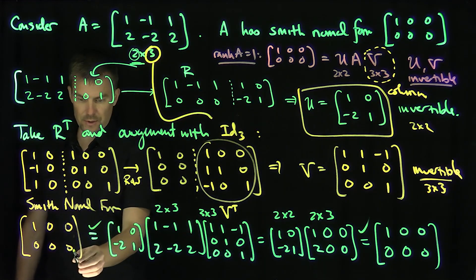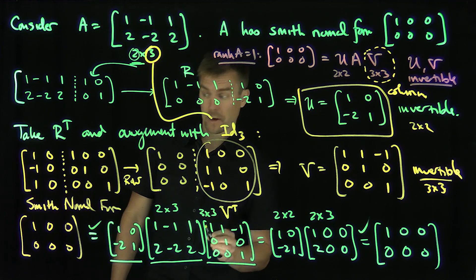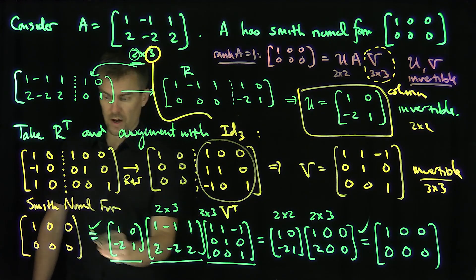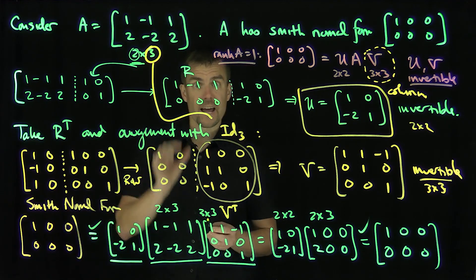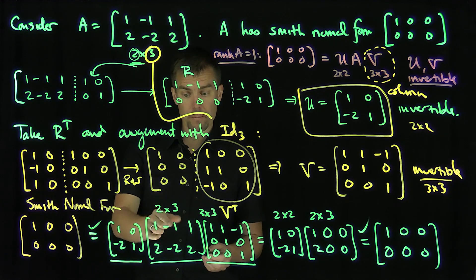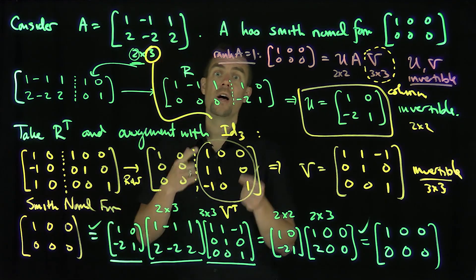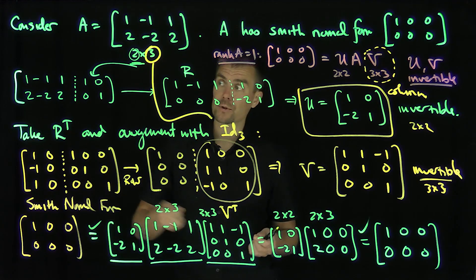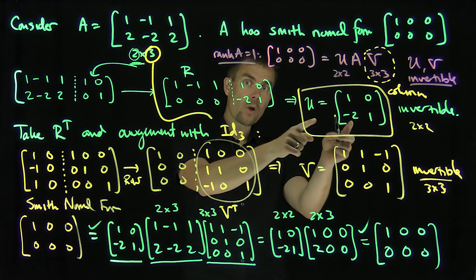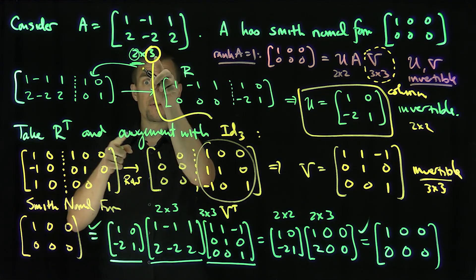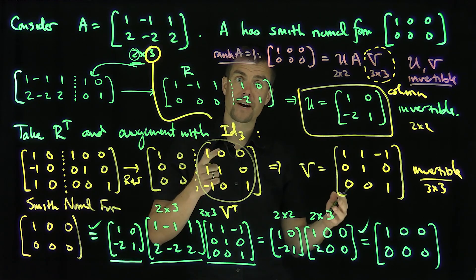So the decomposition is confirmed: [[1,0,0],[0,0,0]] = U·A·V, and the rank of A is 1. Any rank-one 2 by 3 matrix has the same Smith normal form, so equivalent matrices are characterized by this factorization. The procedure is: put A into reduced row echelon form to obtain U; then take the transpose of the RREF, augment with the N-dimensional identity, perform row operations, and transpose the result to get V.